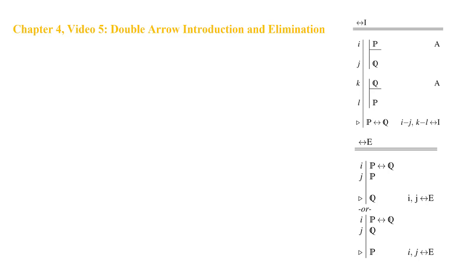Welcome back. This is Chapter 4, Video 5, introducing double arrow introduction and elimination. These are the final two rules of the basic rule set, and they're actually quite easy because they're just double versions of rules we've seen before—double versions of the arrow rules.